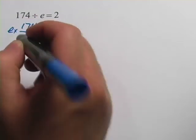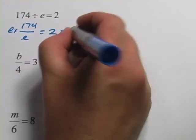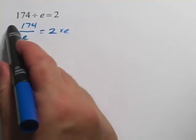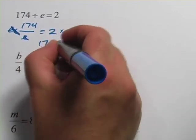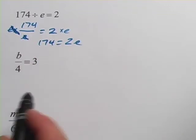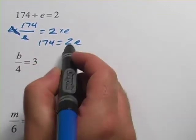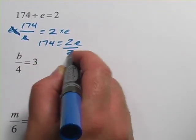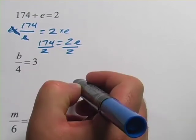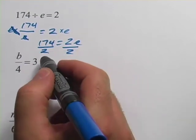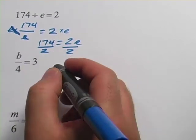So we go e times that and times e over here. Well on this one the e's just cancel and you get 174, and on this one you get 2e. And then finally to get the e alone over here you would divide by 2 and it would be 174 divided by 2. And that would be 87.